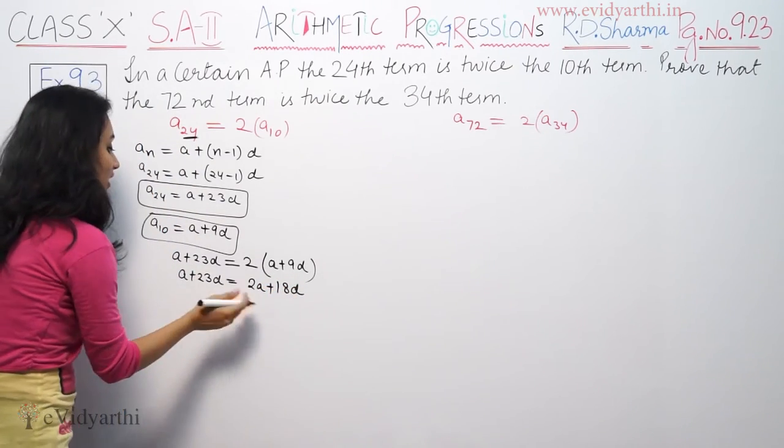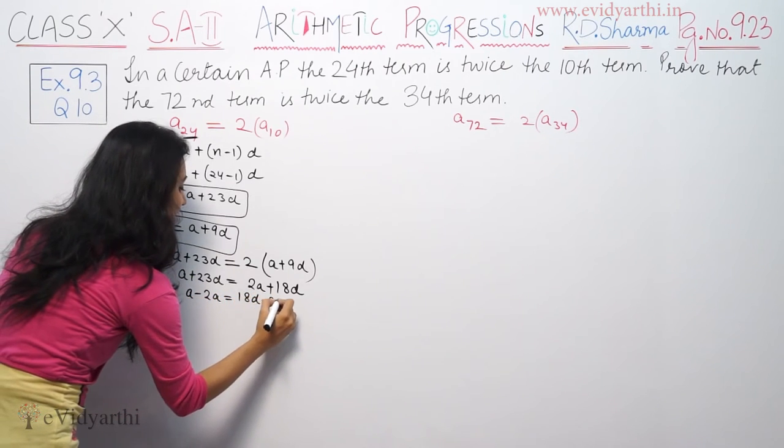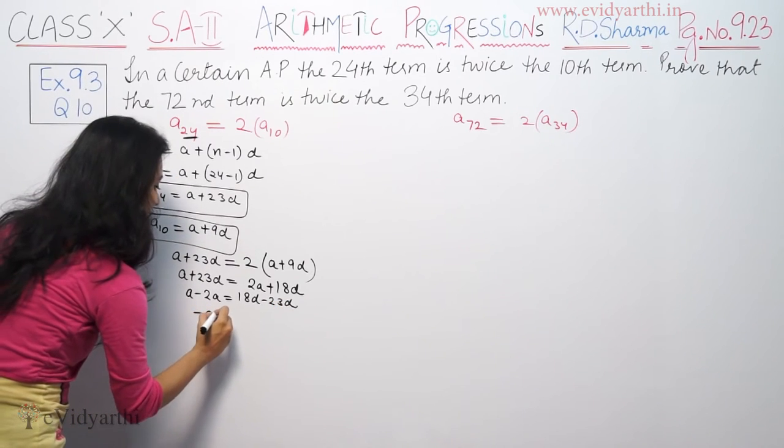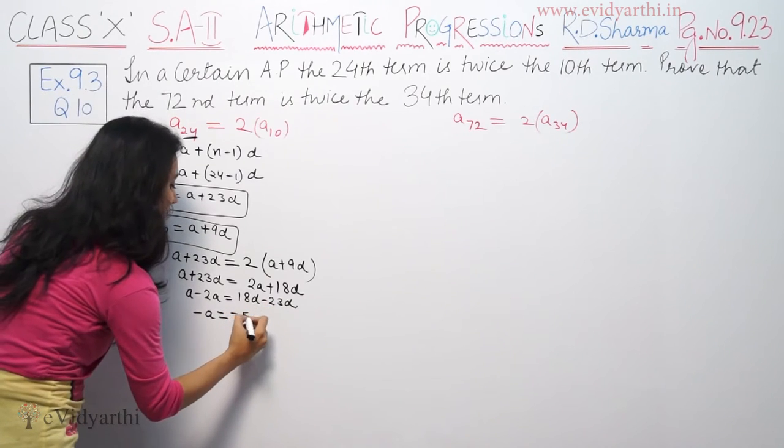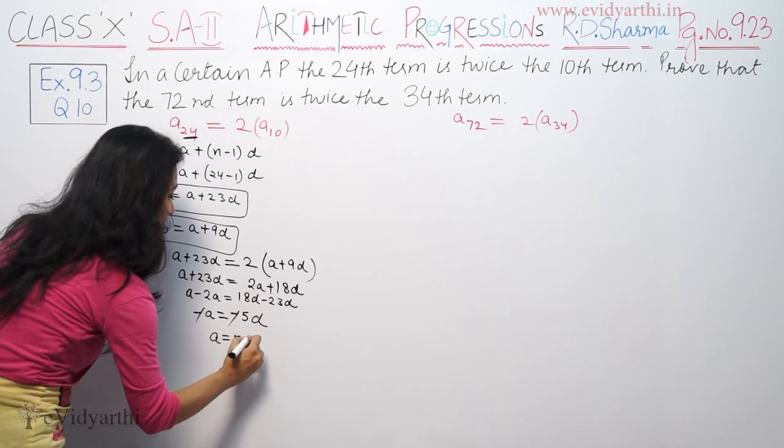So A minus 2A is equal to 18D minus 23D. So A minus 2A is minus A is equal to 18D minus 23D, minus 5D. So A is equal to 5D.